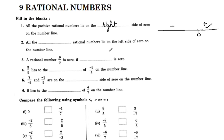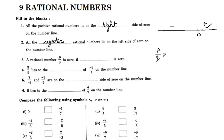All the negative rational numbers lie on the left side of 0 on the number line. The left side contains negative rational numbers.